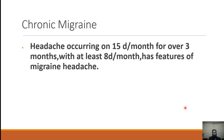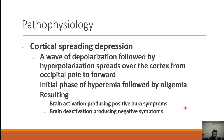Chronic migraine is defined as headache occurring on 15 days per month for over three months with at least eight days per month having features of migraine. The most widely accepted theory for migraine is cortical spreading depression — a wave of depolarization followed by hyperpolarization that spreads over the cortex from occipital pole forward. There is an initial phase of hyperemia followed by oligemia: vessels first dilate causing headache, then constrict reducing blood flow.